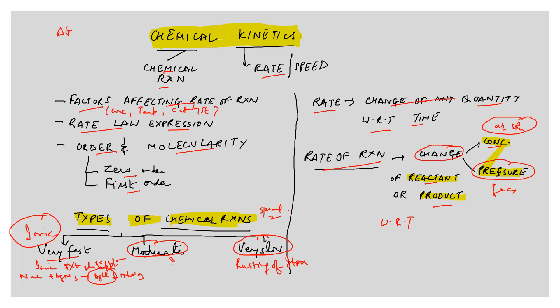In between very fast and very slow there are moderate speed reactions. These are characteristic of covalent compounds or molecular compounds. For example, organic compounds which are covalent in nature need to be slightly heated to speed up the reaction — they occur at moderate speed, not very fast and not very slow.